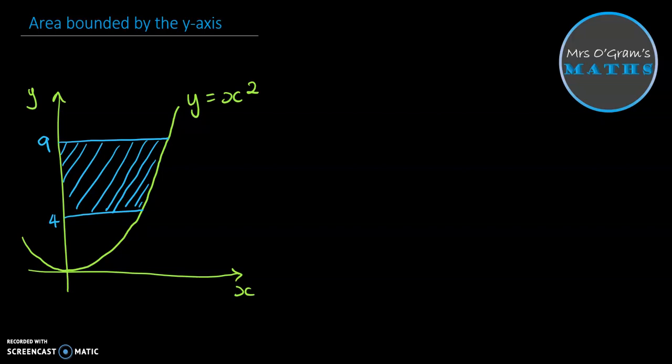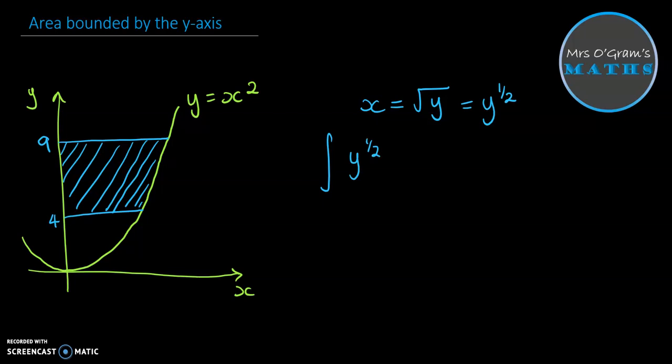So instead of integrating with respect to x, we integrate with respect to y. To do that we need to do a bit of rearranging first. We rearrange the formula for the curve — instead of having y equals something, we want x equals something. So we make x the subject. In this case it's fairly straightforward: x equals the square root of y. We're going to integrate this, so I'll change that into exponent form: y to the half.